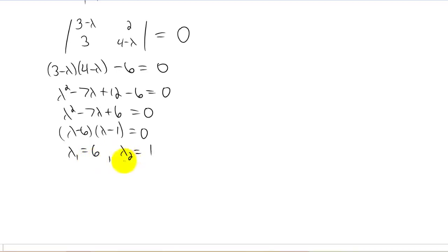I'll call lambda one six, and I'll call lambda two one. And I don't actually remember if we used this vocabulary in class, but these two values for lambda, these are called the eigenvalues.